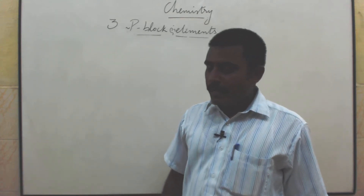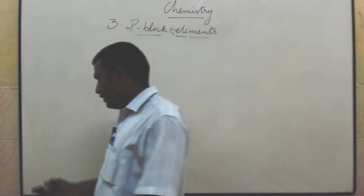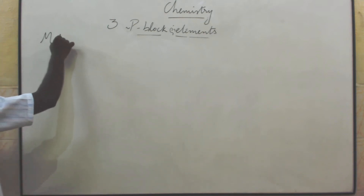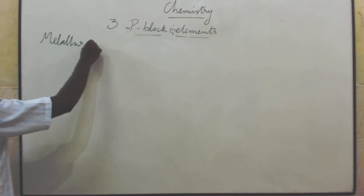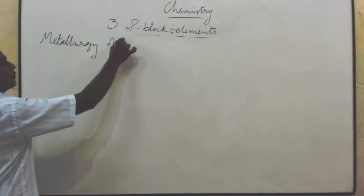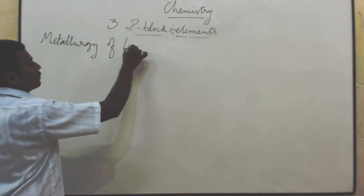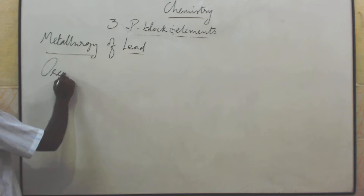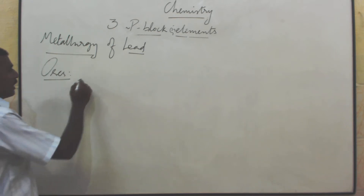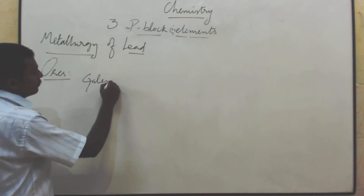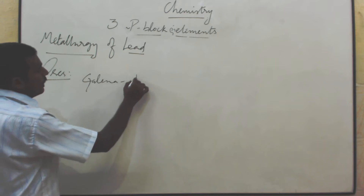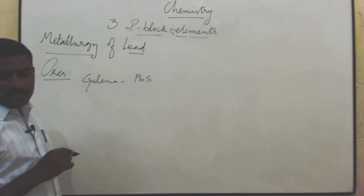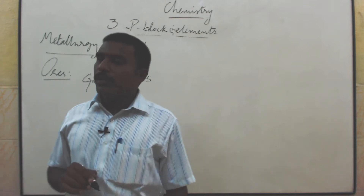Next, a very important chapter: metallurgy of lead. What are the ores of lead? The first one is galena — galena means lead sulfide (PbS). Others include anglicite and cerussite (lead carbonate), and lead oxide.